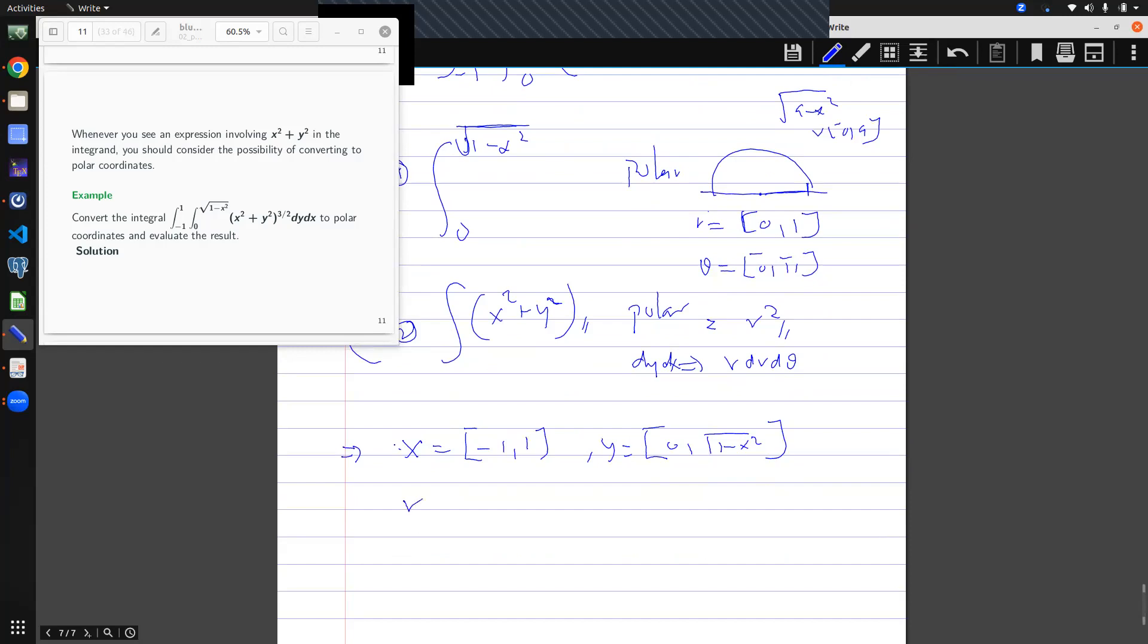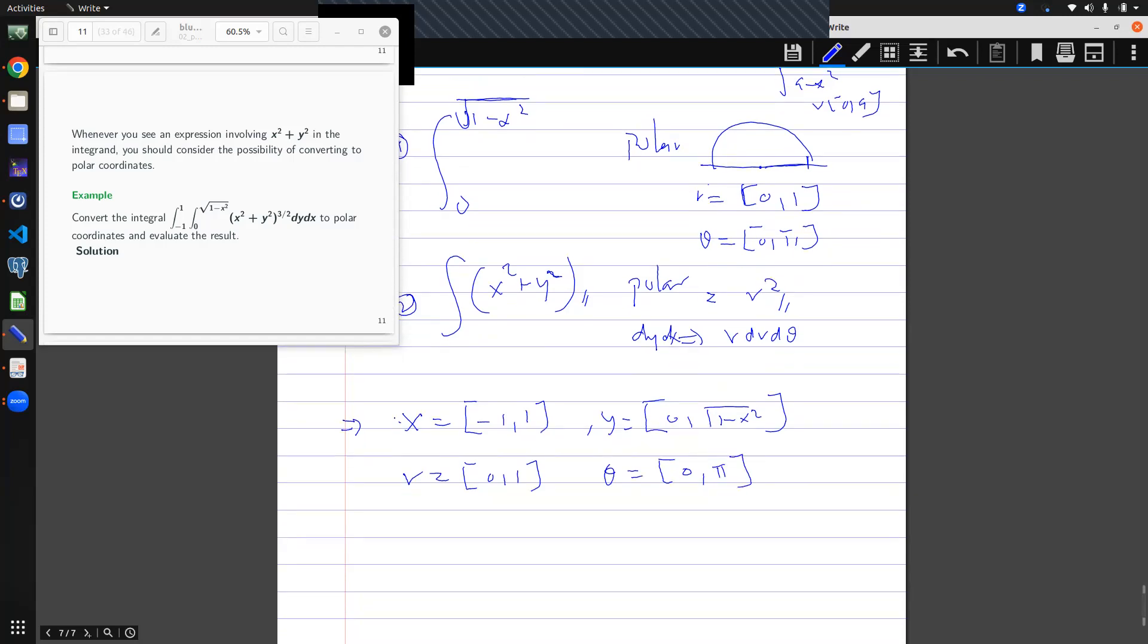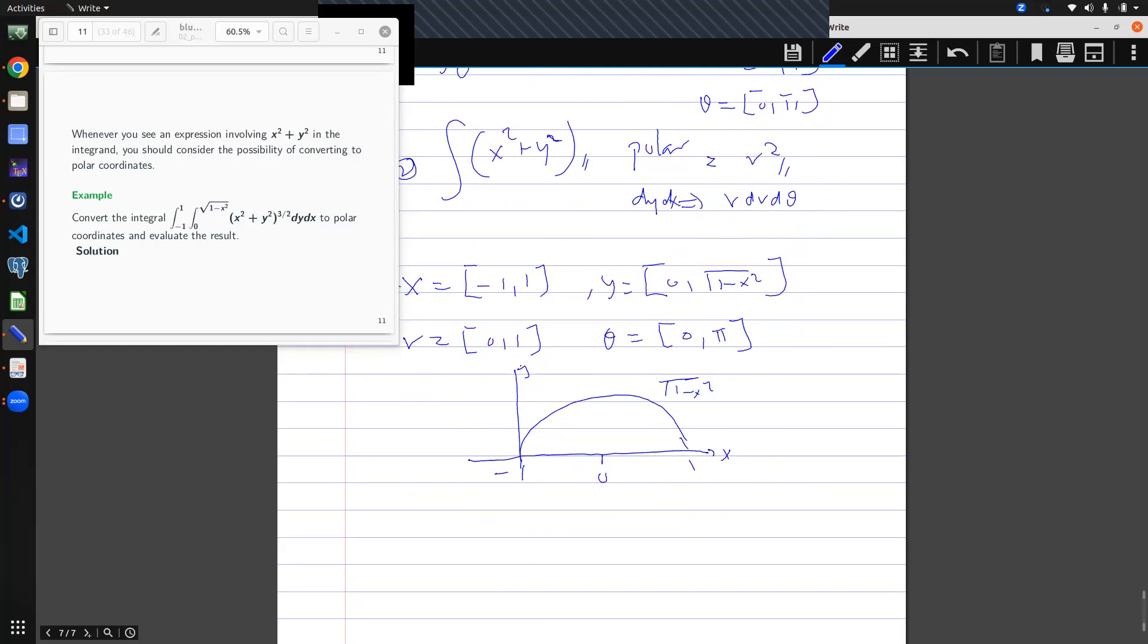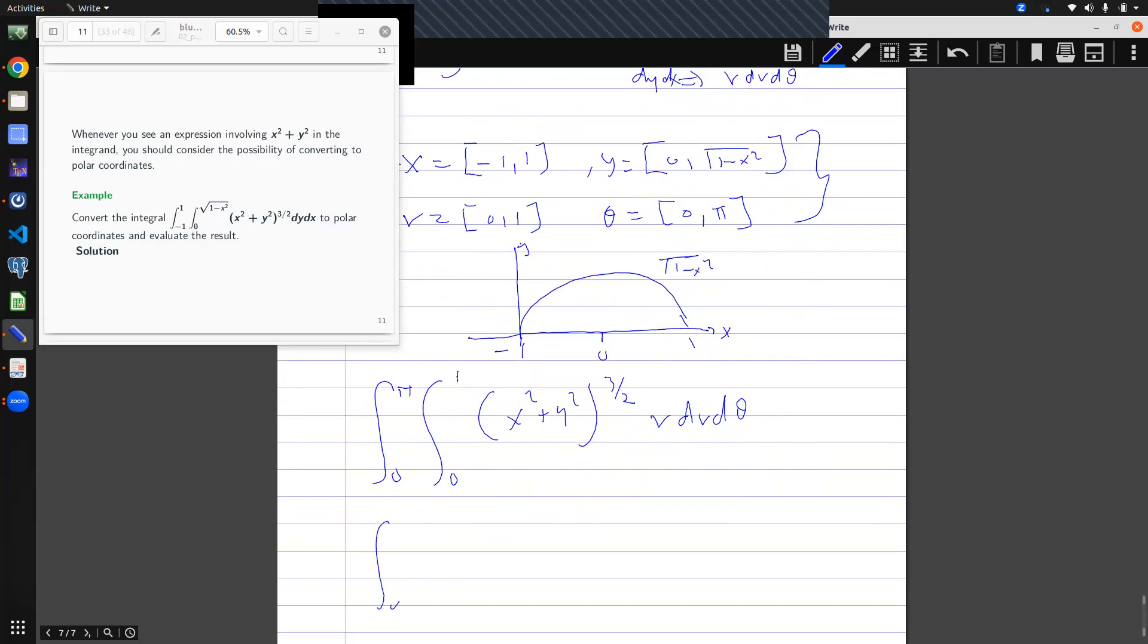And so with this, our r would be zero to one, and then our theta would be zero to, this is half of a circle, so pi. So this becomes zero to pi, zero to one integral, which is x squared plus y squared three on two, r dr d theta. I'm doing a substitution.